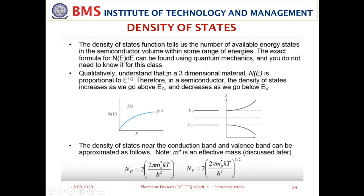In a semiconductor, the density of states increases as we move deeper into the conduction band. For an intrinsic semiconductor, plotting E versus N(E): the density of states is less near the conduction band edge and increases deeper into the conduction band. The mathematical equations for the effective density of states are: NC = 2(2π·mn*·kT / h²)^(3/2) for the conduction band and NV = 2(2π·mp*·kT / h²)^(3/2) for the valence band, where h is Planck's constant.